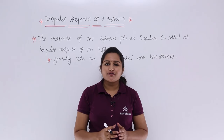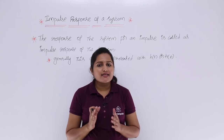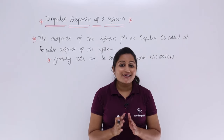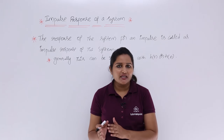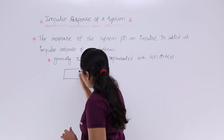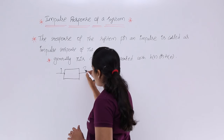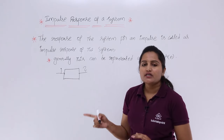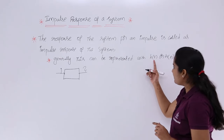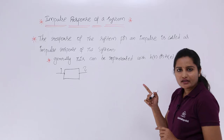In this video we are going to discuss the impulse response of a system. As the name indicates, the impulse response is the response of a system when we give an impulse as input. That impulse response is always represented as h(t) in the continuous domain and h(n) in the discrete domain.